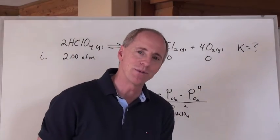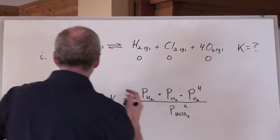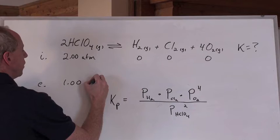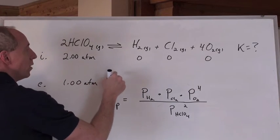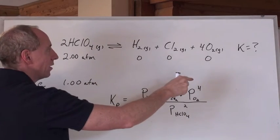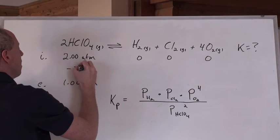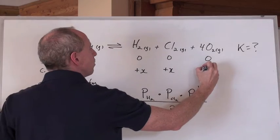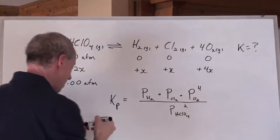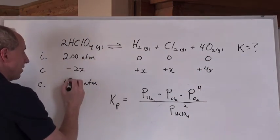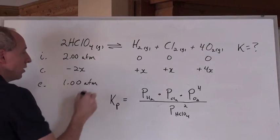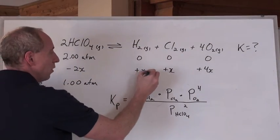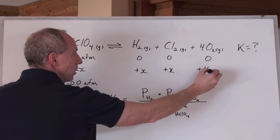By the way, in a pressure type of equilibrium question, let's just pretend that at equilibrium we had 1.00 atmospheres here at equilibrium. And we needed to then do that same calculation we did before, where this was minus 2x for the change line, and this was going to be plus x, plus x, and plus 4x. When you find out what x is here, and x is actually going to equal 0.5, then this is going to be 0.5, this is going to be 0.5, and this is going to be 2.